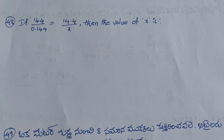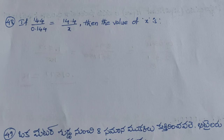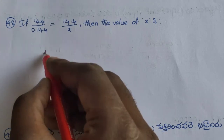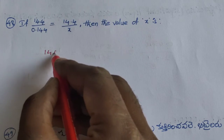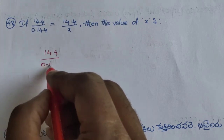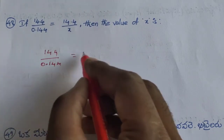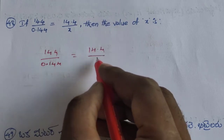If 144 by 0.144 equals 14.4 by x, then find the value of x. First step: 144 divided by 0.144 equals 14.4 divided by x.